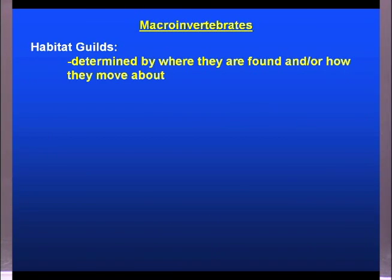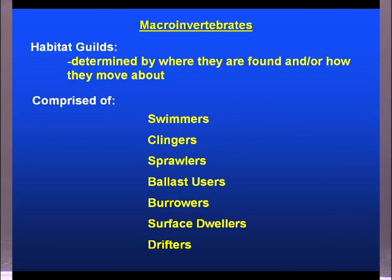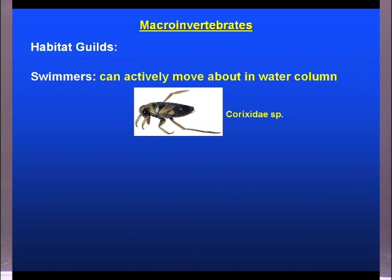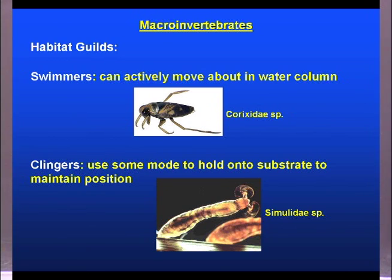Moving on to habitat guilds — these look at where organisms are found and how they move about or interact with their environment. The habitat guilds are: swimmers, clingers, sprawlers, ballast users, burrowers, surface dwellers, and drifters. Swimmers simply move about in the water column; they're active enough to swim and have special structures allowing them to dictate their position in the water at any given point. Clingers use adaptations that allow them to hold on to substrate or objects in the water and cling in the flow.